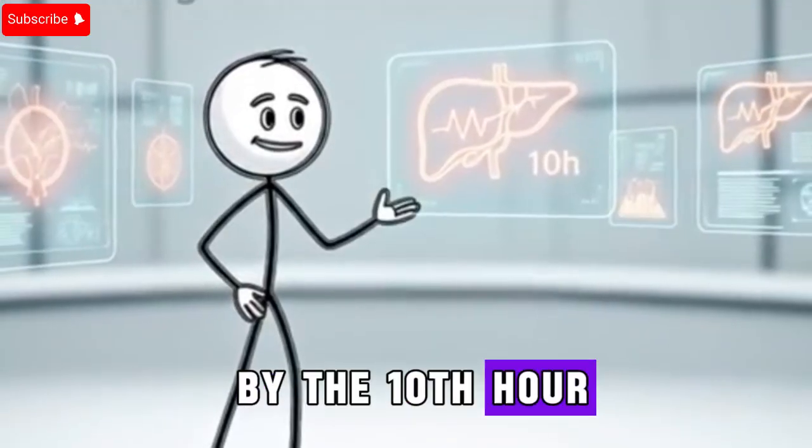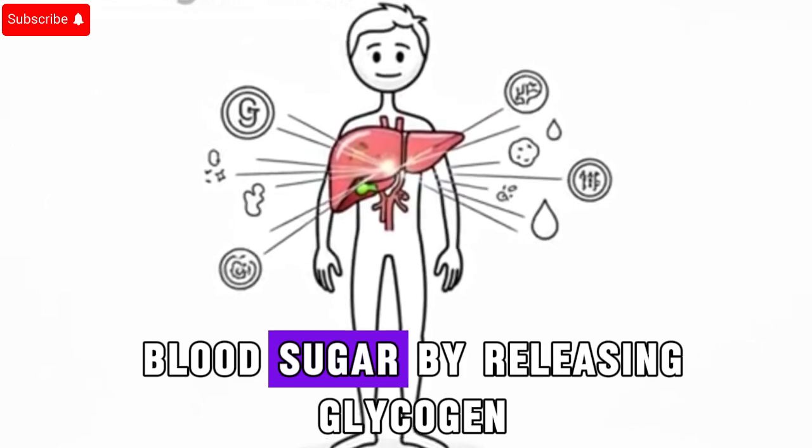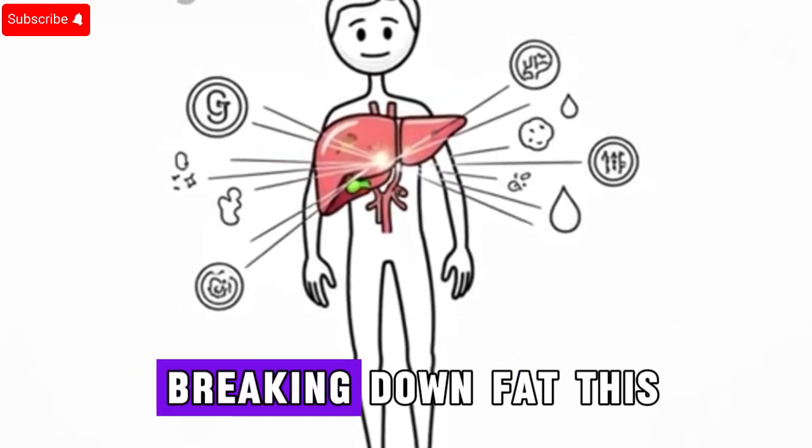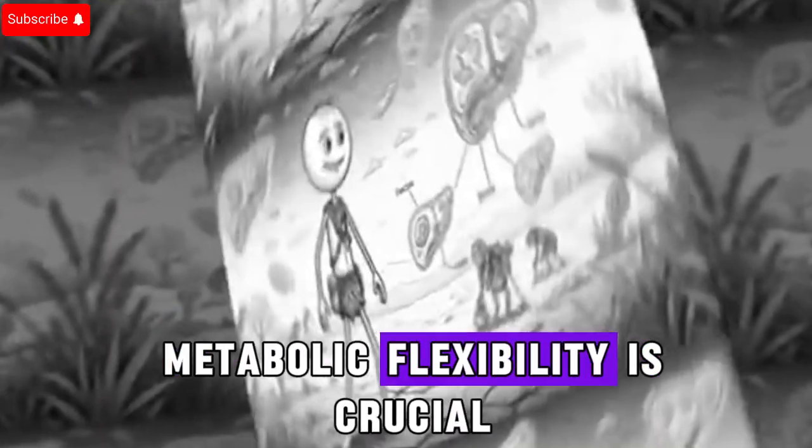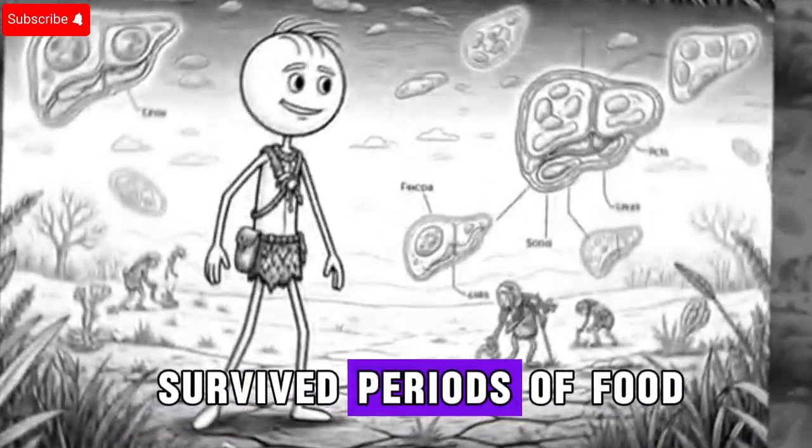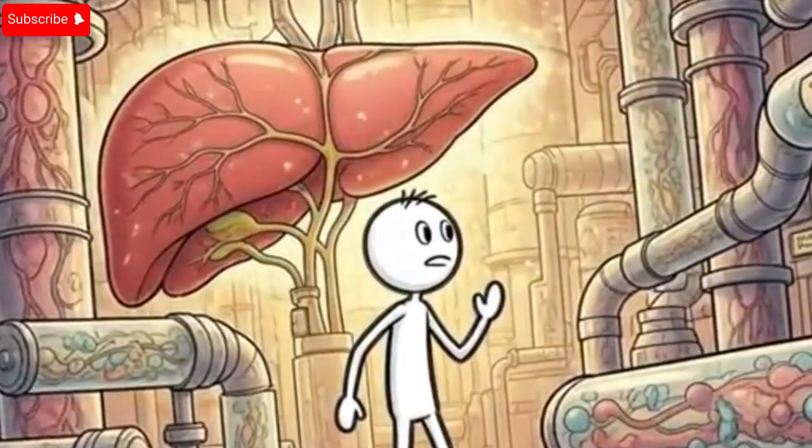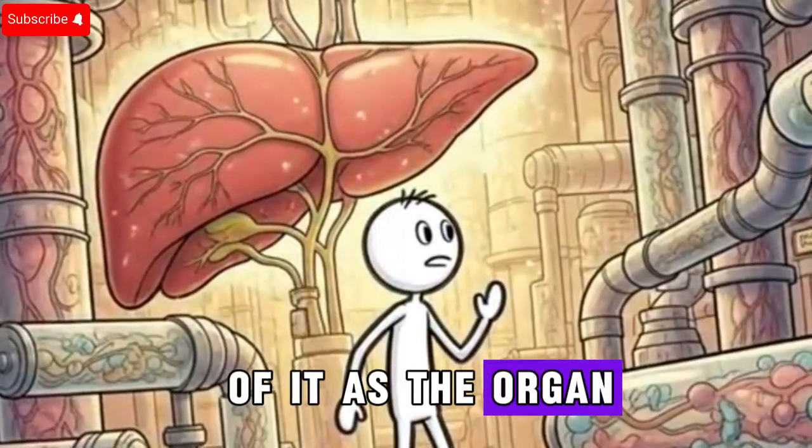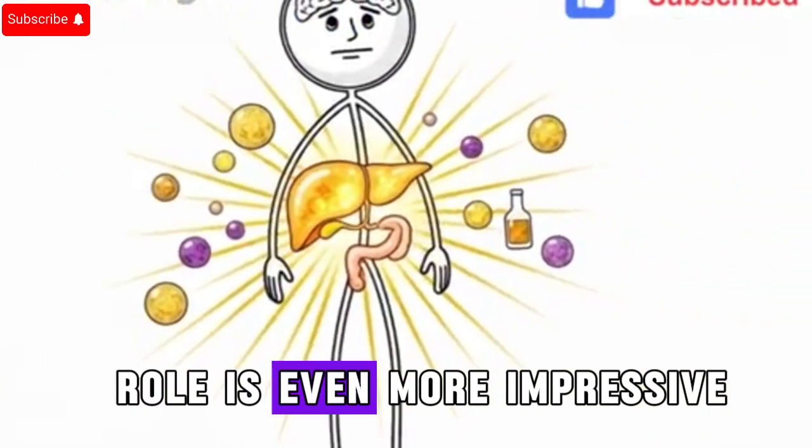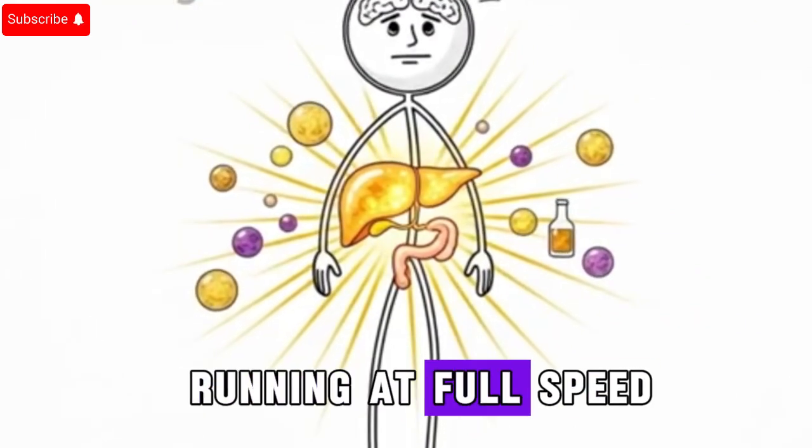By the 10th hour, your liver is working like a hidden hero. It not only regulates blood sugar by releasing glycogen, but also begins preparing for the next step: breaking down fat. This metabolic flexibility is crucial. Without it, humans would never have survived periods of food scarcity. Your liver is essentially a biochemical factory.